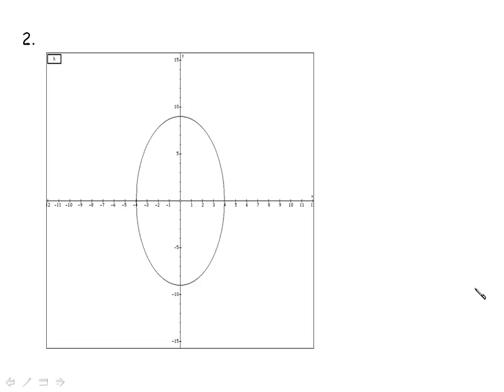Now the next one, not surprisingly, is not a function. At any point, if you went through and drew a vertical line through it, you notice how you're intersecting in more than one spot. So this fails the vertical line test, is not a function.